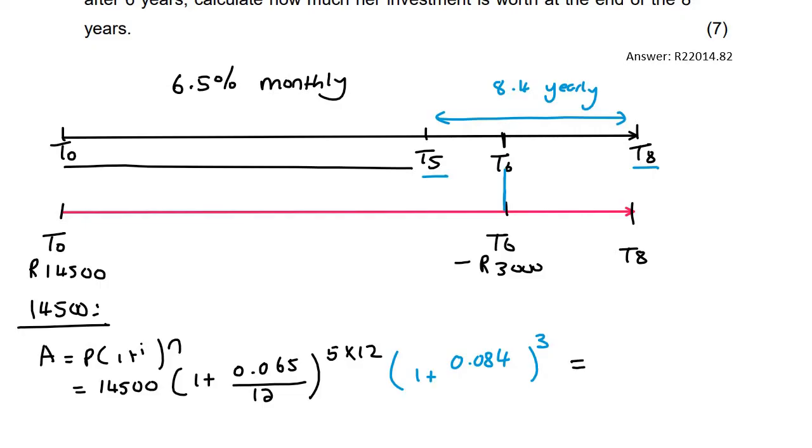But you don't want to round off because it's not the final answer. And so that gives us 25,539, and then don't round off, 9, 8, 6, 3, 4.